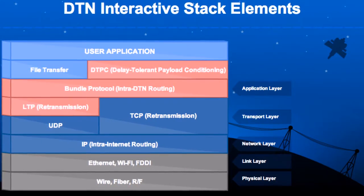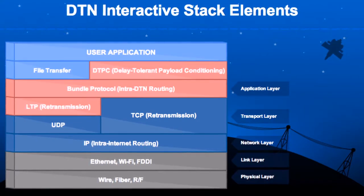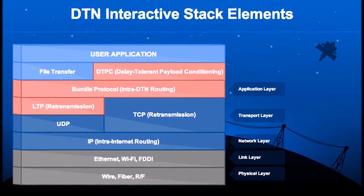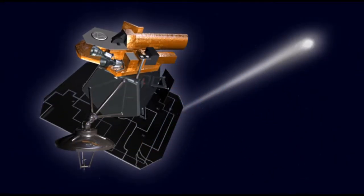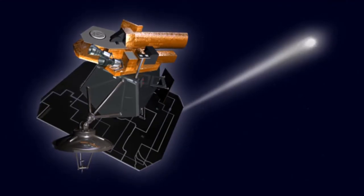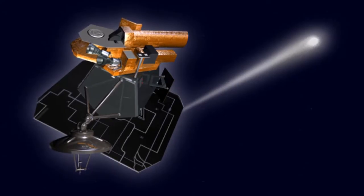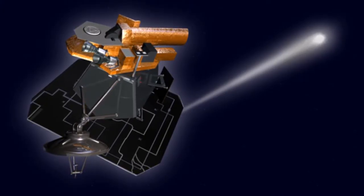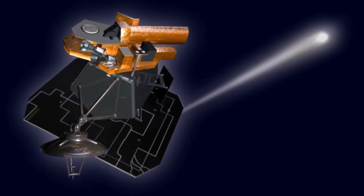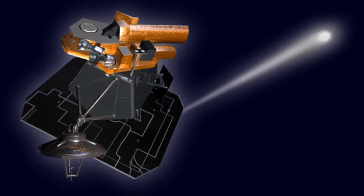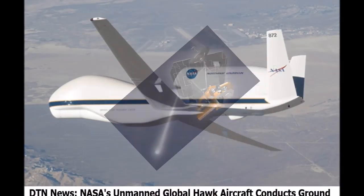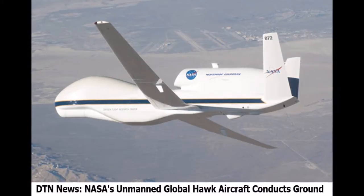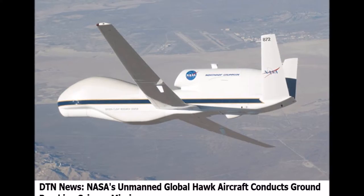Paket protokol DTN dapat beroperasi bersamaan dengan suite IP terestrial atau dapat beroperasi secara independen. DTN menyediakan pengiriman data dengan aman menggunakan mekanisme penyimpanan dan maju otomatis. Setiap paket data yang diterima langsung diteruskan jika memungkinkan, namun disimpan untuk transmisi masa depan jika penerusan tidak memungkinkan, namun diperkirakan akan terjadi di masa mendatang. Akibatnya, hanya hop berikutnya yang perlu tersedia saat menggunakan DTN. Paket DTN juga berisi manajemen jaringan, keamanan, perutean dan kemampuan layanan berkualitas, yang serupa dengan kemampuan yang disediakan oleh suite internet terestrial.